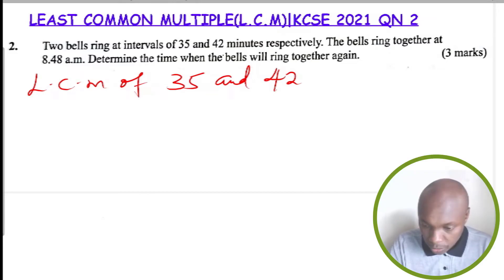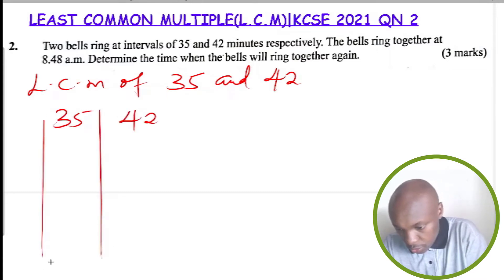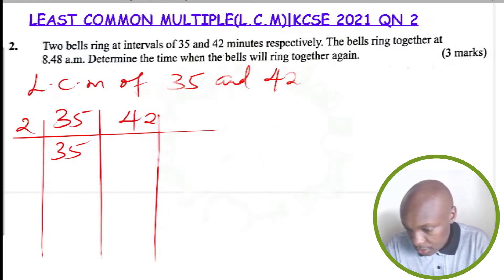To get the LCM there are two methods. There is the factor method - we're going to use both of them. Divide, start by dividing by the least prime number, that is two. Divide everything by two. Where we can't divide completely, like 35 can't be divided completely by two, we just leave it like that. So this will be 21.